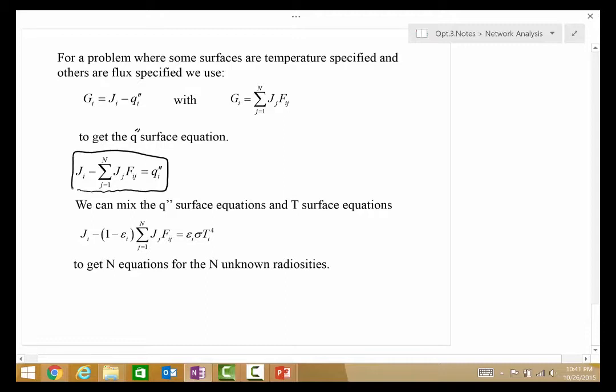So, now, these are the J equations. For parts of the problem which are specified in terms of Q, known surface heat flux, we use this equation. For other parts of the problem which are specified in terms of temperature and emissive power, we use this.